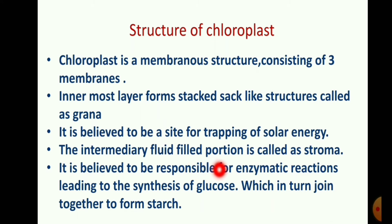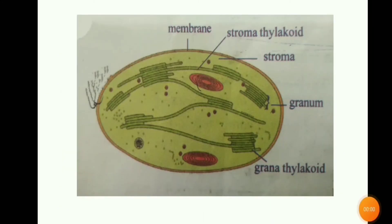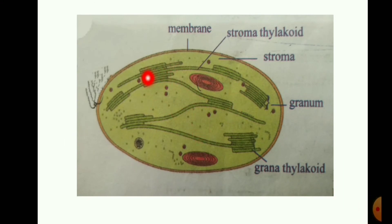Glucose is a simple substance that forms the complex substance starch. We can observe tube-like structures in the chloroplast. These structures are called thylakoids.